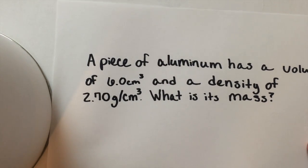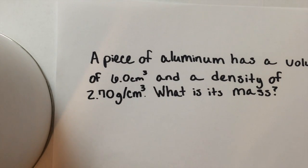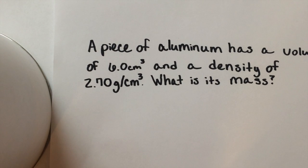A piece of aluminum has a volume of 6.0 centimeters cubed and a density of 2.70 grams per cubic centimeter. So what is the mass?